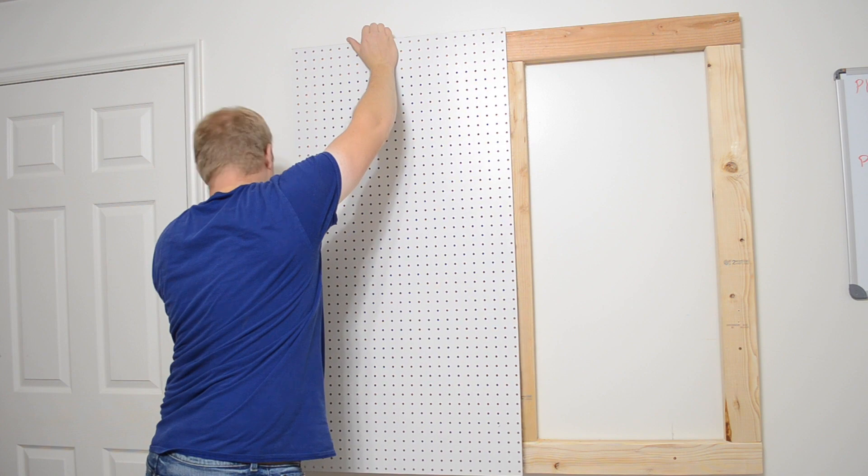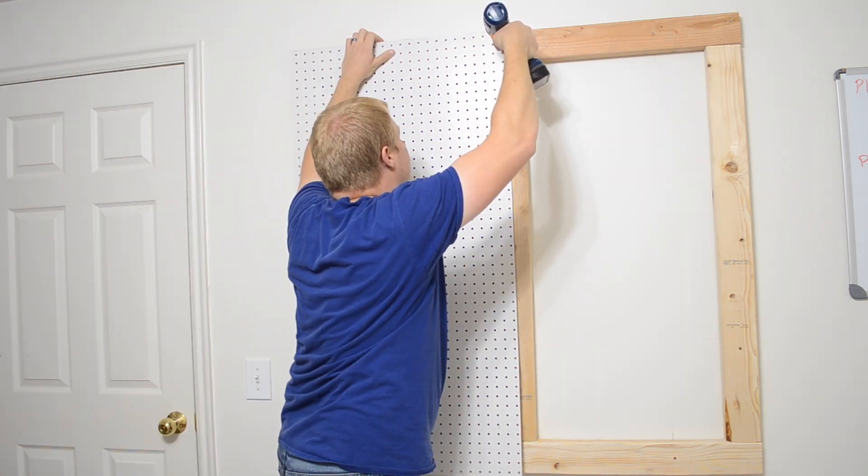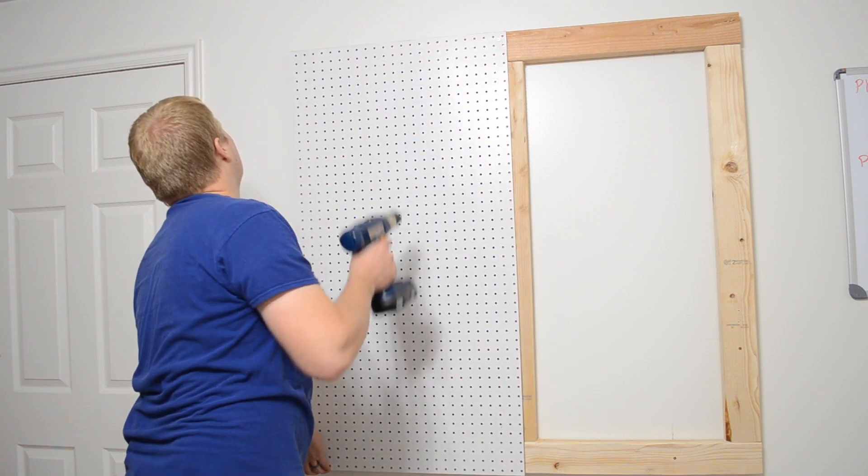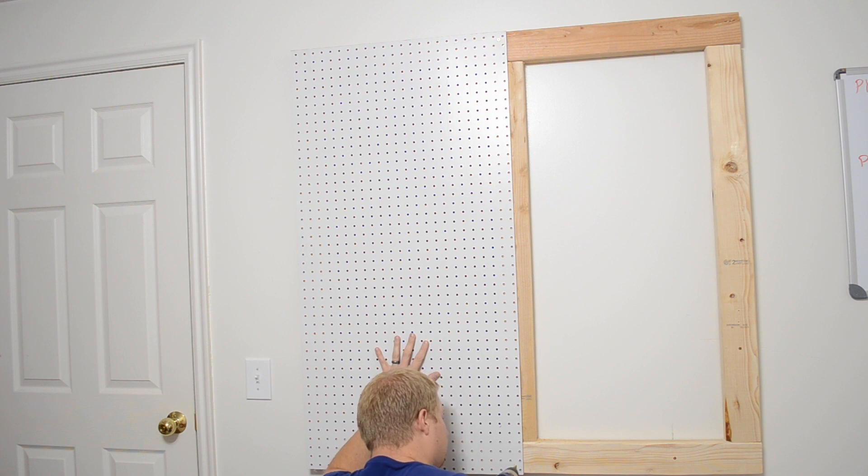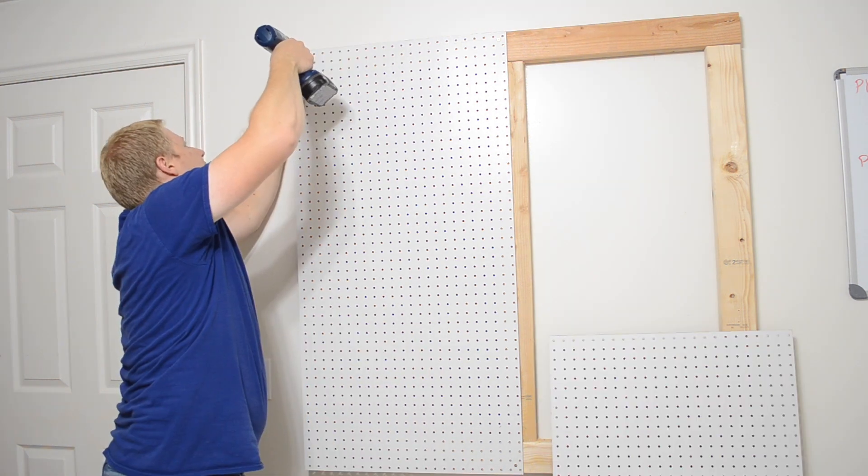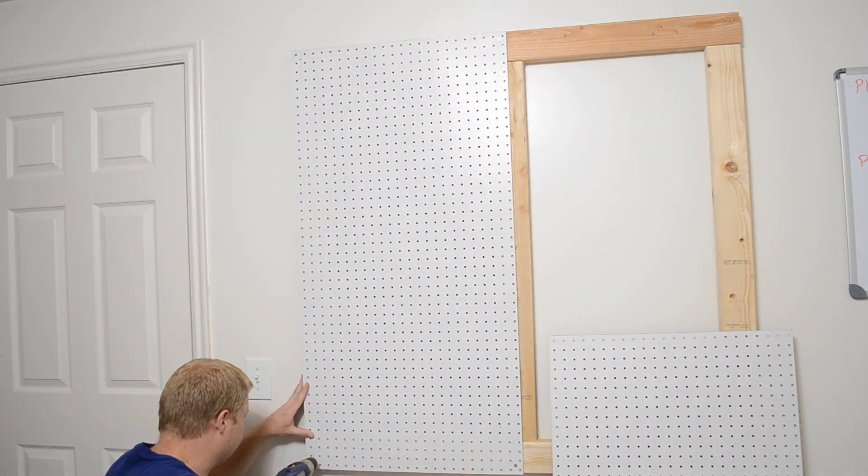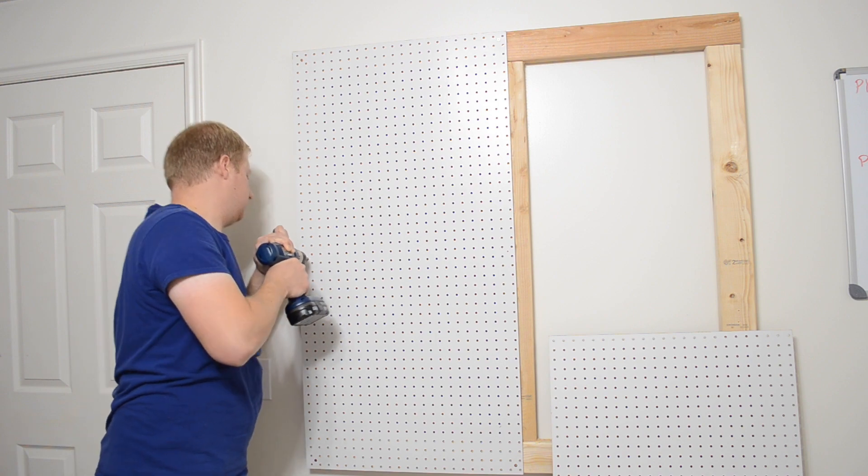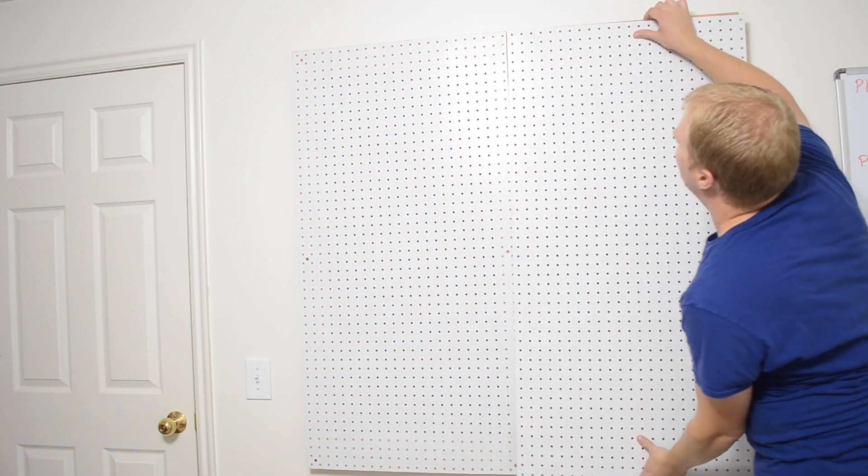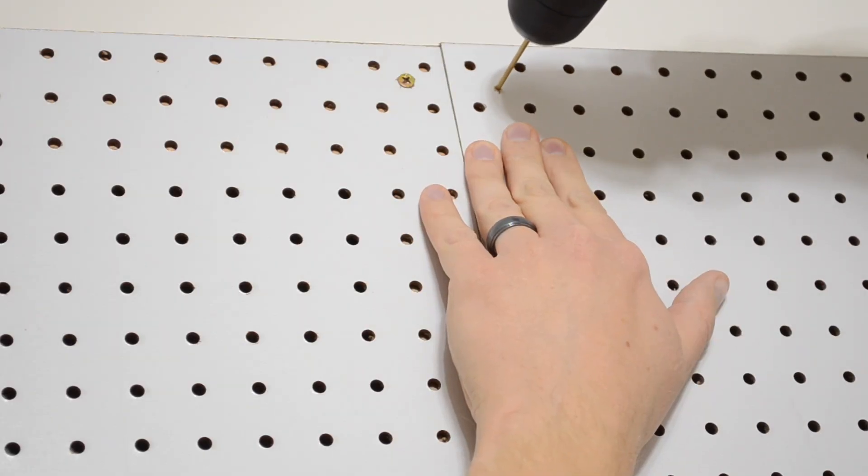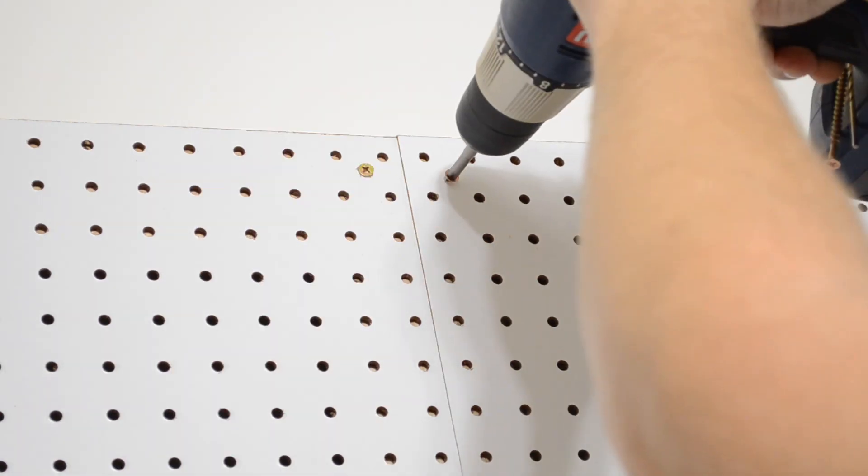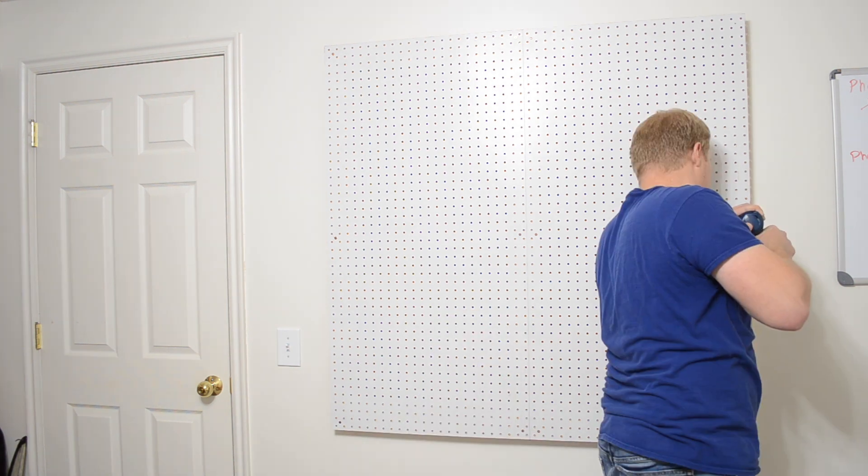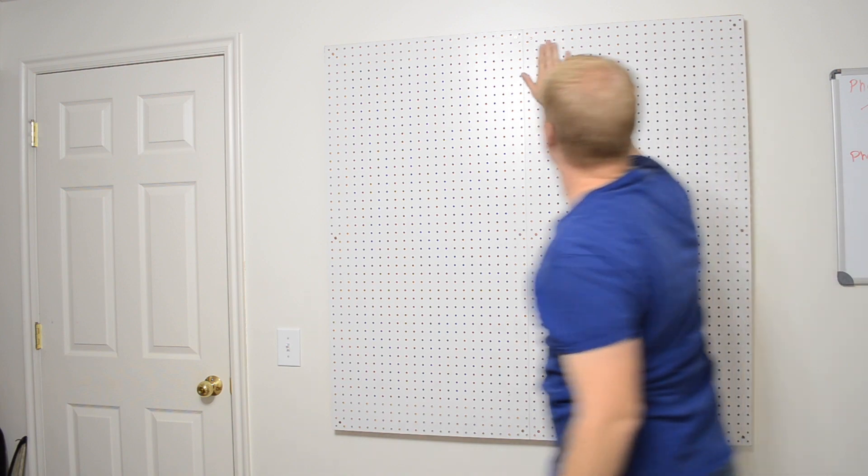I did that on all four corners, and now it's time to line up our first piece of pegboard. Line it up, drill the hole, and drive in your first screw. I decided to put screws in each of the four corners, and then extra screws for support in the middle. The second sheet went up the same way, and I carefully lined it up with the first.